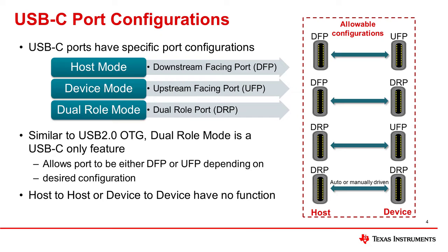Before going deeper into USB Type-C, it's important to go over some of the terminology associated with USB Type-C. USB Type-C defines a port to be either a downstream facing port (DFP), an upstream facing port (UFP), or a dual role port (DRP). A DFP is the same as a host mode port, and a UFP is the same as a device mode port. The DRP is a USB-C only feature, similar to the old USB 2.0 OTG, indicating a mode in which both the host and the device are being supported.